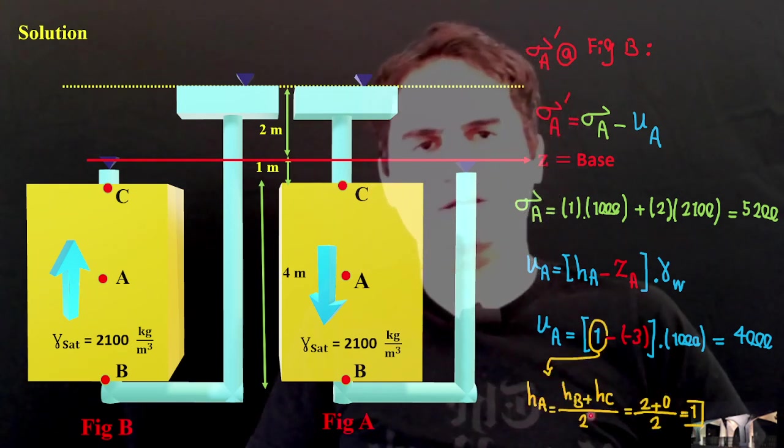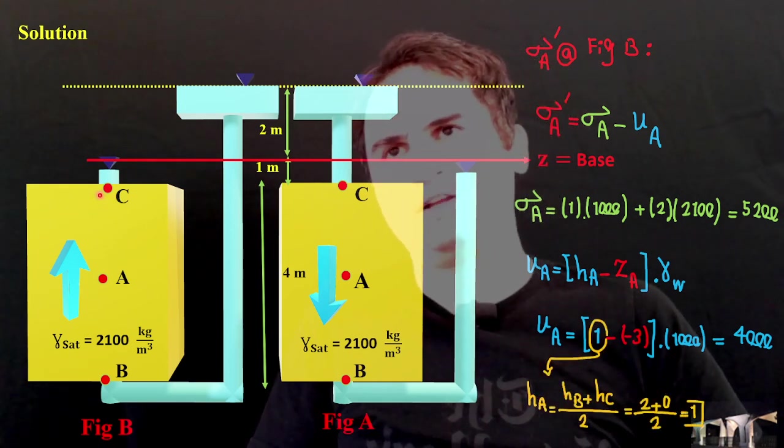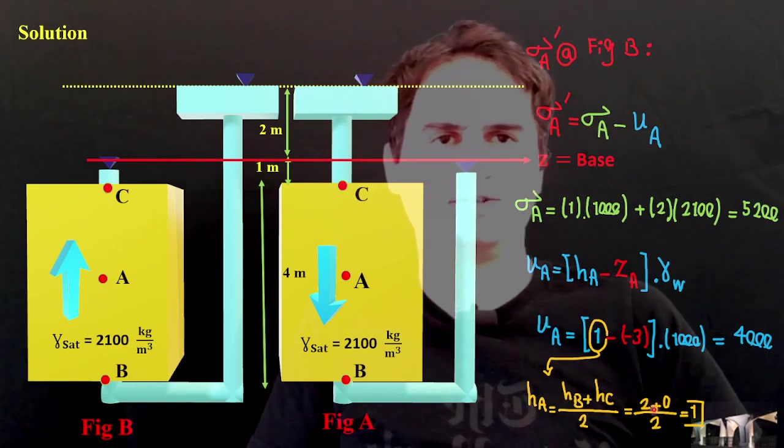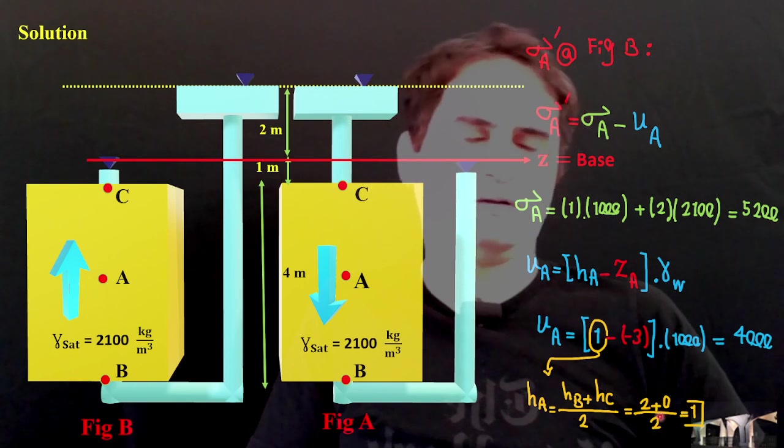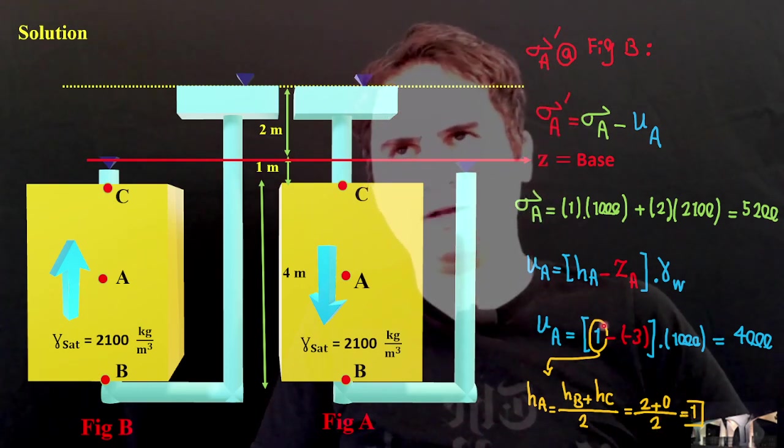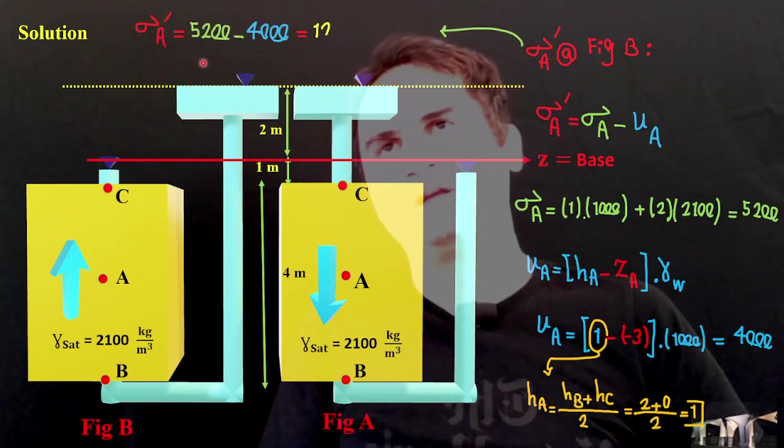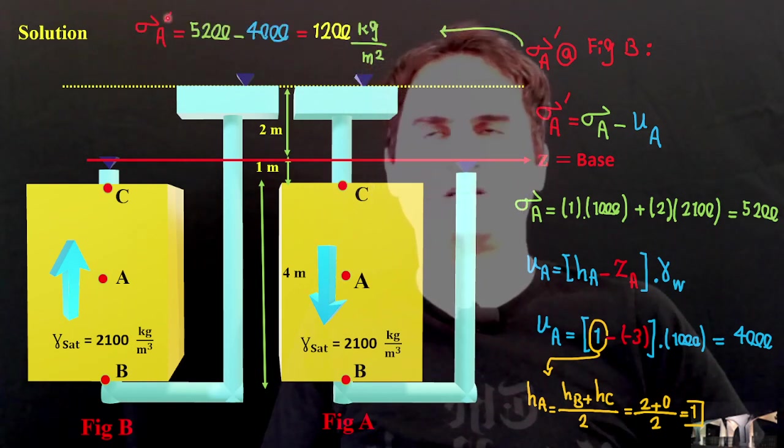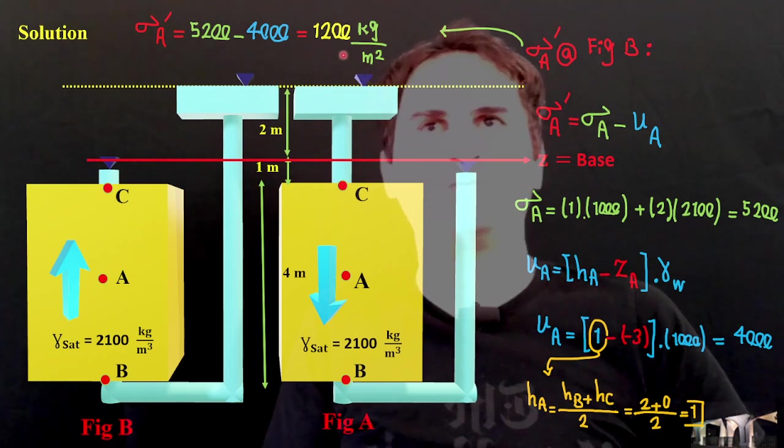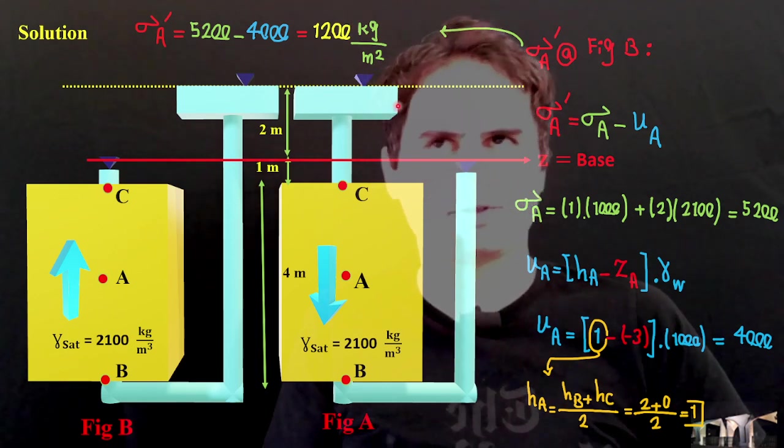And again, H_A is an average of H_B and H_C. This time, H_B is 2 and H_C is 0. Add it up together, divide it, it just gives us 1 and replace here. Back to sigma prime A. If you replace it, it just gives us sigma prime A is 5,200 minus 4,000, which is 1,200 kg over meter squared.